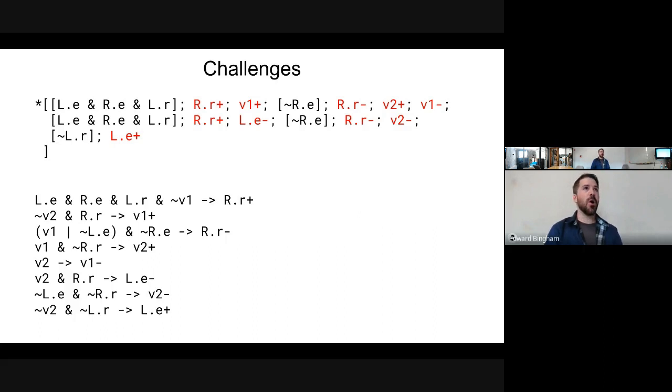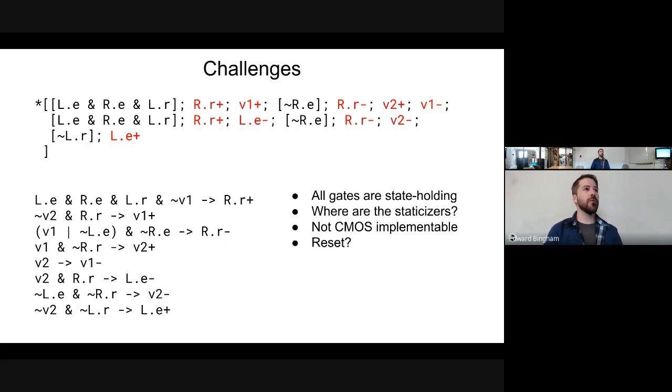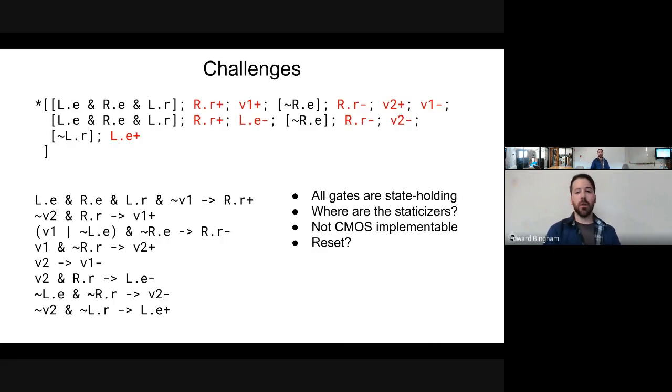You'll notice that we still have a long way to go before this is a viable circuit. Every single one of these gates are currently state-holding, which is very inefficient. There isn't really room for any staticizers in any of these gates. None of these gates are actually CMOS implementable. They go every direction possible. Reset hasn't been generated for this. So these are all the problems that we have yet to solve effectively in this algorithm.